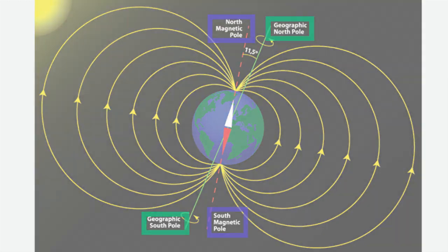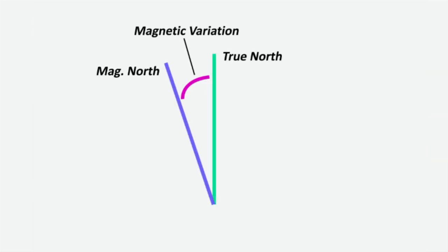We call this offset the magnetic variation, which is the difference between the true north and the magnetic north. It can be to the west or to the east, depending on where you are, but usually in South Africa it is towards the west.